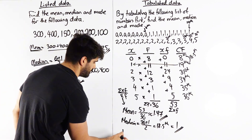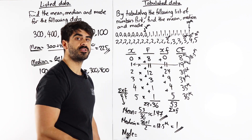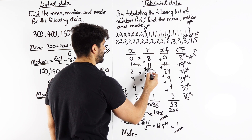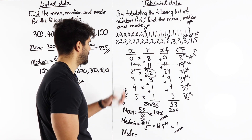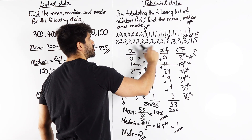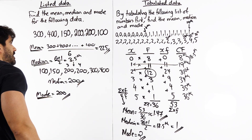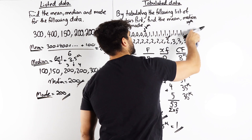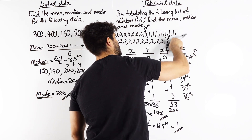Finally, the mode is the most frequent value. The highest frequency is 12, but that is the frequency of the number 2. So the mode is 2 — be careful, students often write 12, but 12 is not in the data. The most frequent number is 2. And that's how we do all the averages. Remember, in the exam they don't give you the listed data, so you need to be able to do all of this from the table alone.